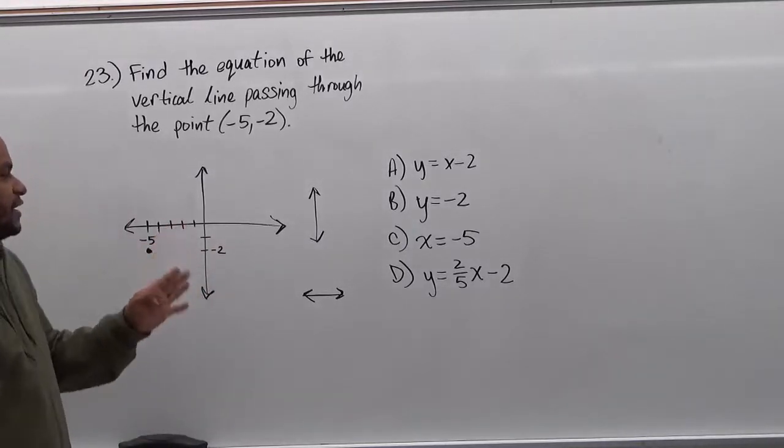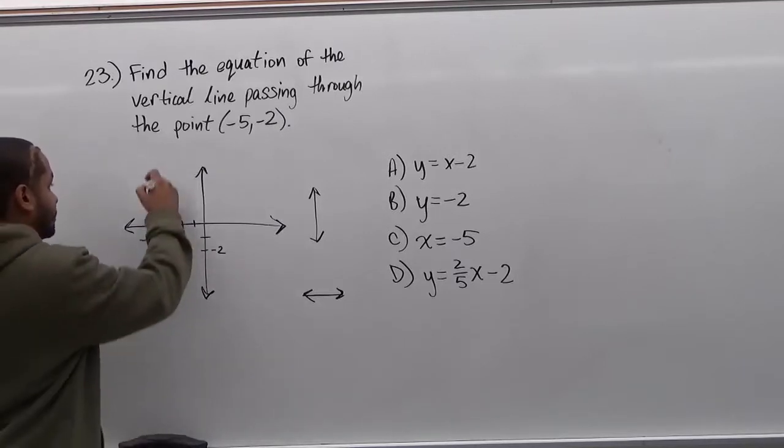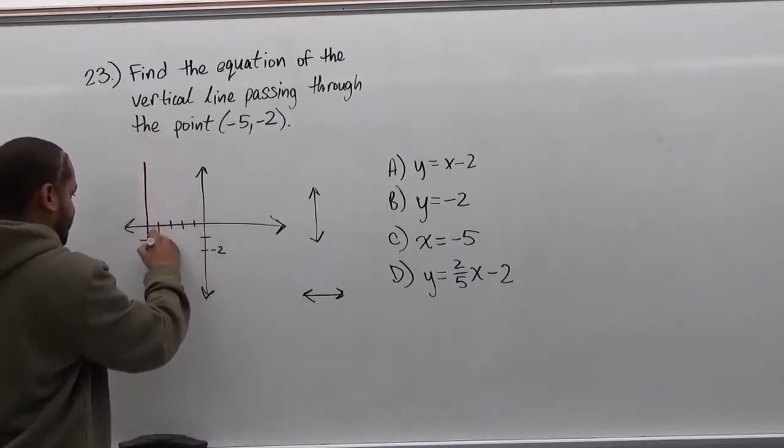Now it's a vertical line going through this point, so a vertical line would look exactly like this.